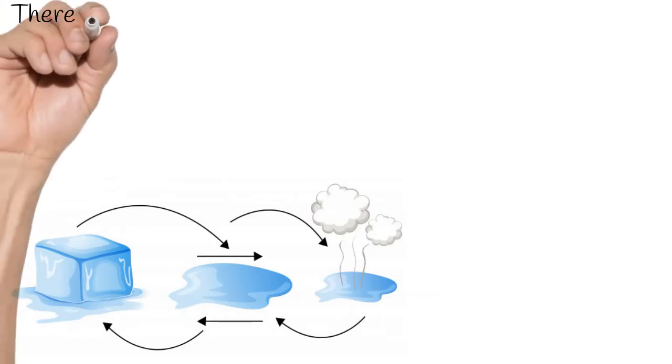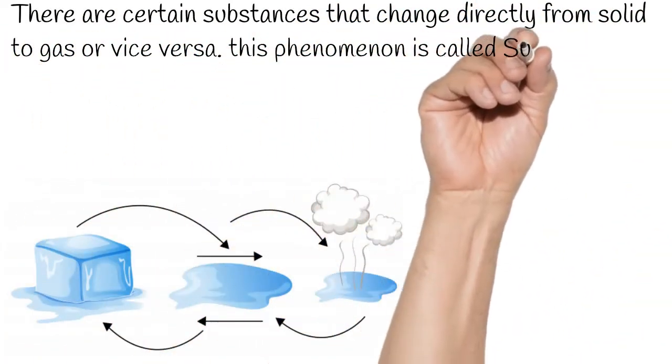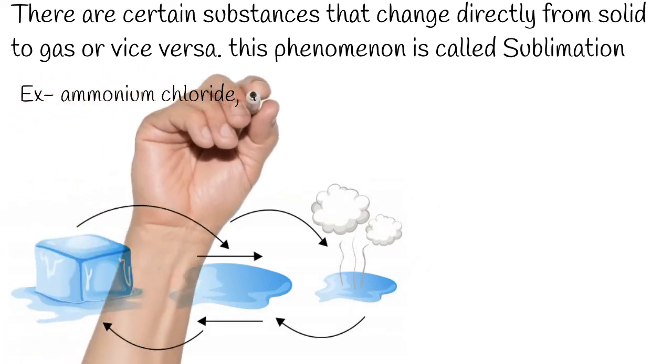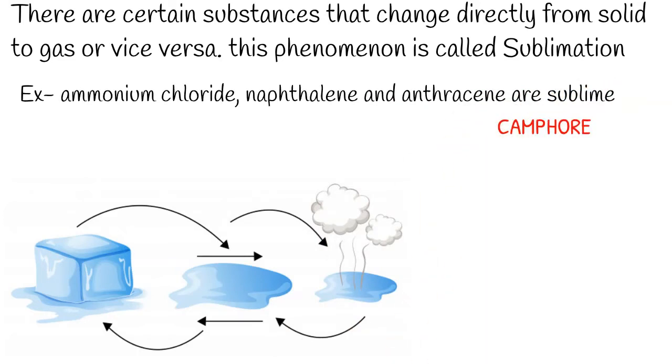However, there are certain substances that change directly from solid to gas or vice versa. This phenomenon is called sublimation. The solids like ammonium chloride, camphor, naphthalene and anthracene are sublime.